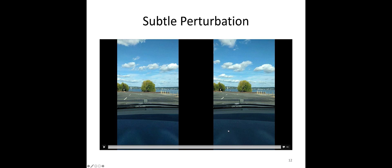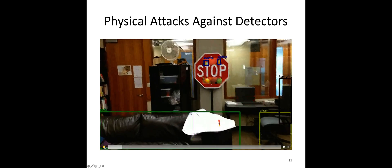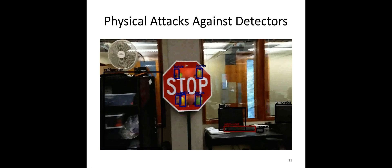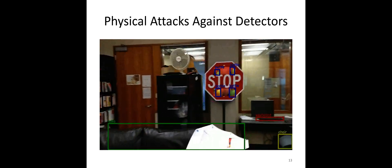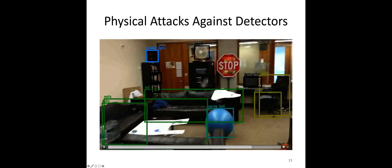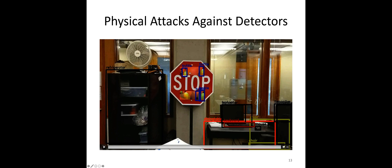Besides classification models, we also show that this physical perturbation is powerful enough to fool not only classifiers, but also object detectors. Here is an example where the physical adversarial stop sign is tested against the YOLO object detector. From different angles and distances, this stop sign is not detected, while other objects are correctly detected. Unless you get very, very close to the sign might it be recognized, but by then it would be too late for the car to stop.